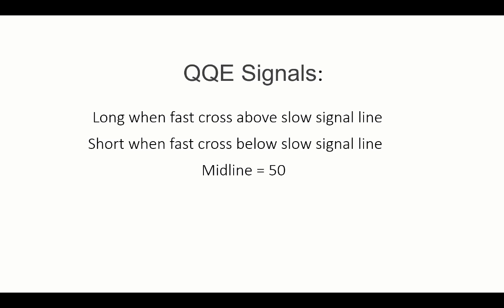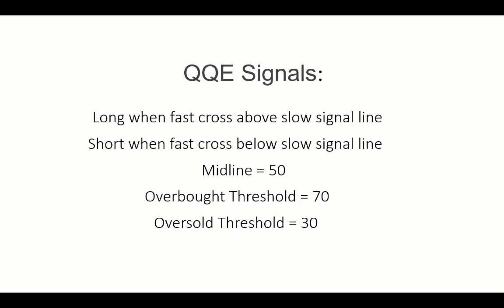We also have the overbought and oversold thresholds — 70 and 30 by default. We'll look at how to locate those with Bloodhound from Shark Indicators, as well as potentially some exit opportunities for directional trades or reversal setups in these areas.